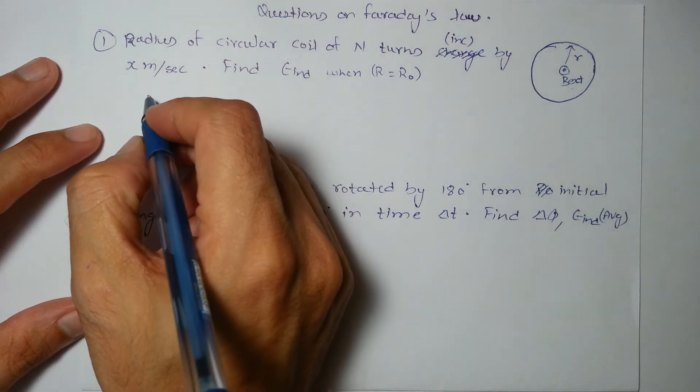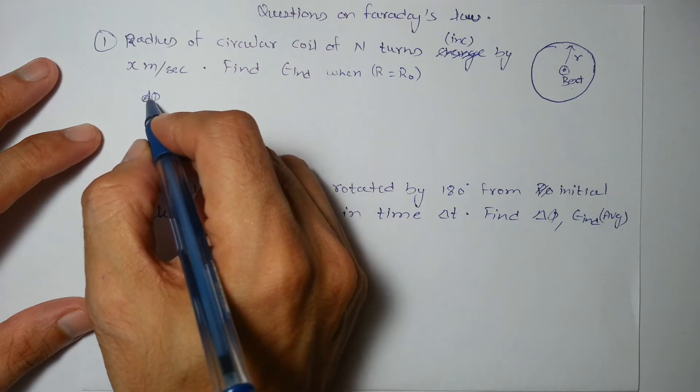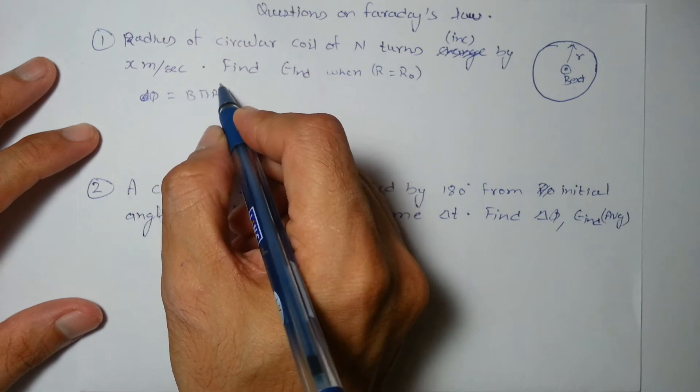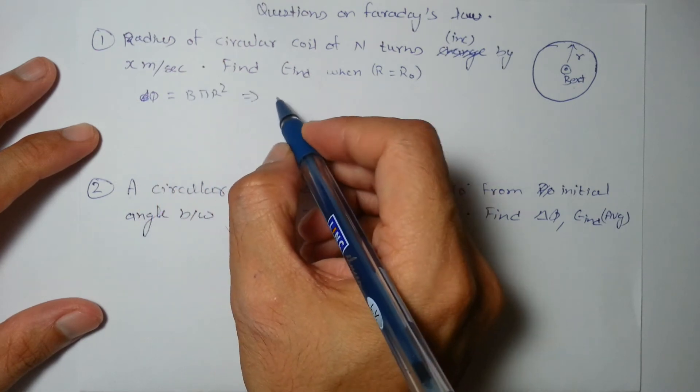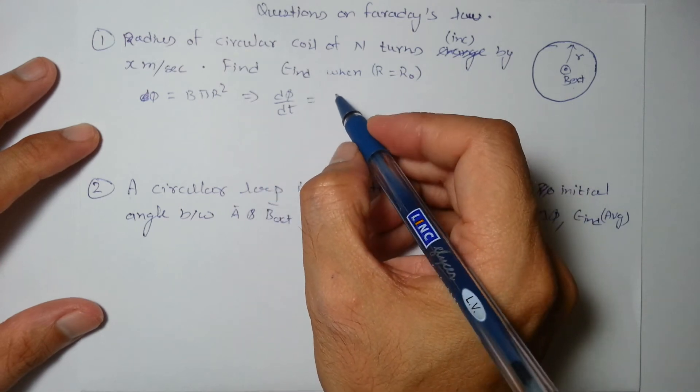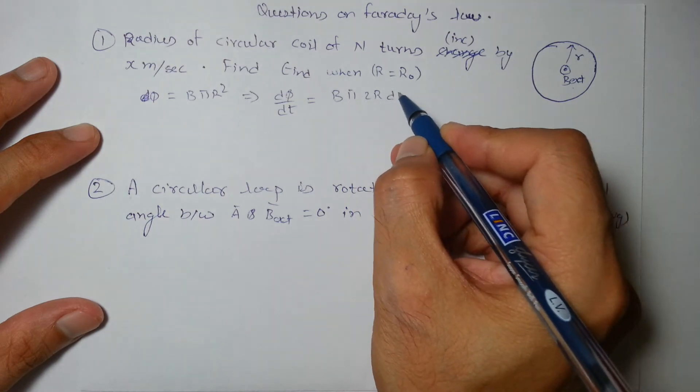So we'll write down first of all flux. Flux will be B into pi r square. Then d phi by dt on differentiating it will get B into pi 2r dr by dt.